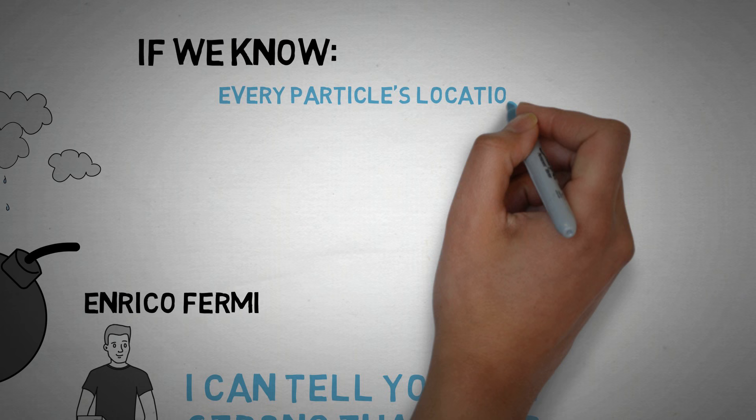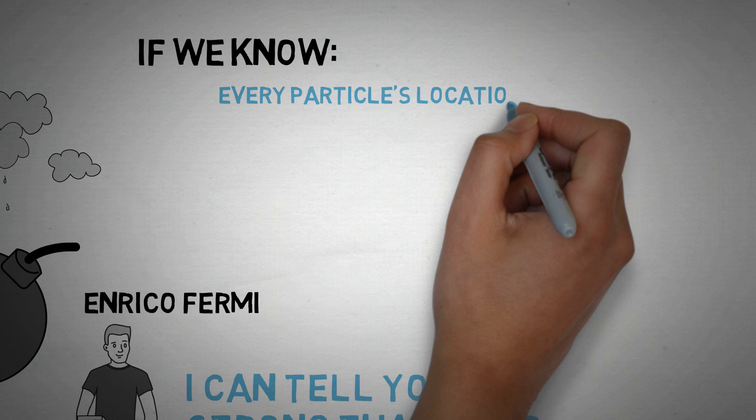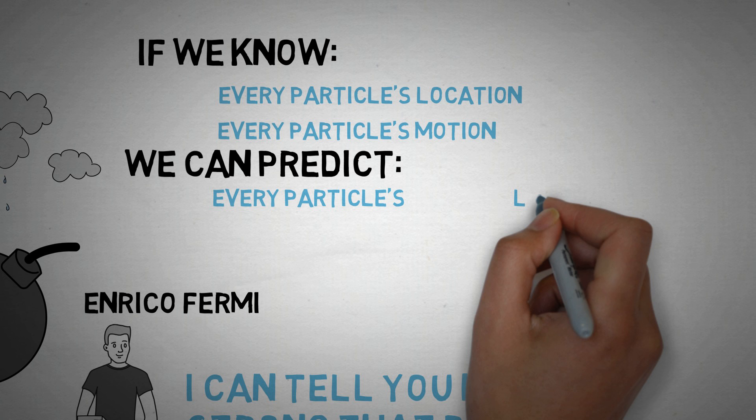But the principle goes like this: if we know every known particle in the universe, where it is right now and what its motion is, then we can perfectly predict the future. Which is basically saying the more we know about now, the better we can predict the future.